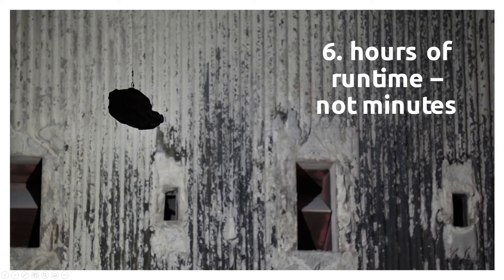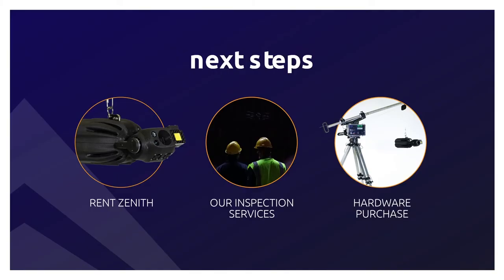Last but not least, one of my favorite things about Zenith is the fact that it runs for hours, not minutes like a traditional drone inspection. The average run time on a Zenith battery is about two hours — you simply pop it out, put the next one in, and continue. Most of our inspections average about 30 to 45 minutes, so you rarely push that run time.